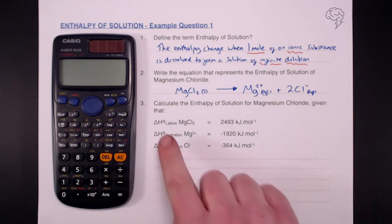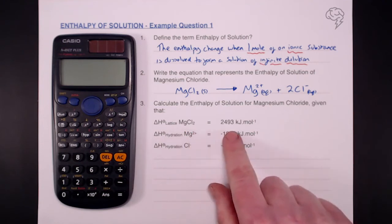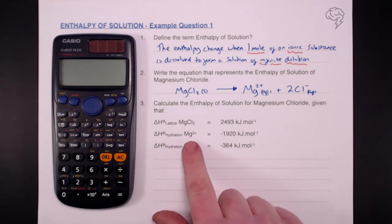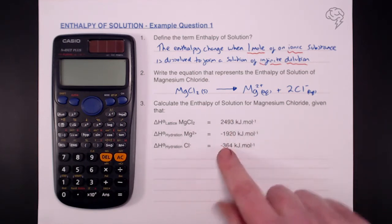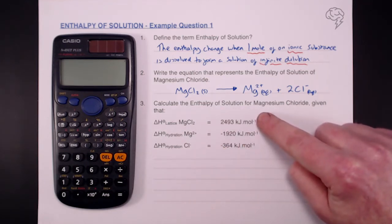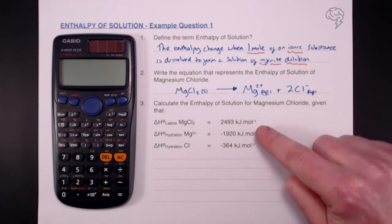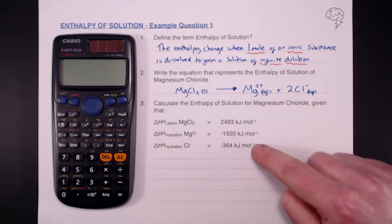We've got delta H lattice of MgCl2, delta H hydration of the magnesium ions, and delta H hydration of the chloride ions. As we'd expect, this is an endothermic process because we're breaking the lattice, and these are exothermic processes.